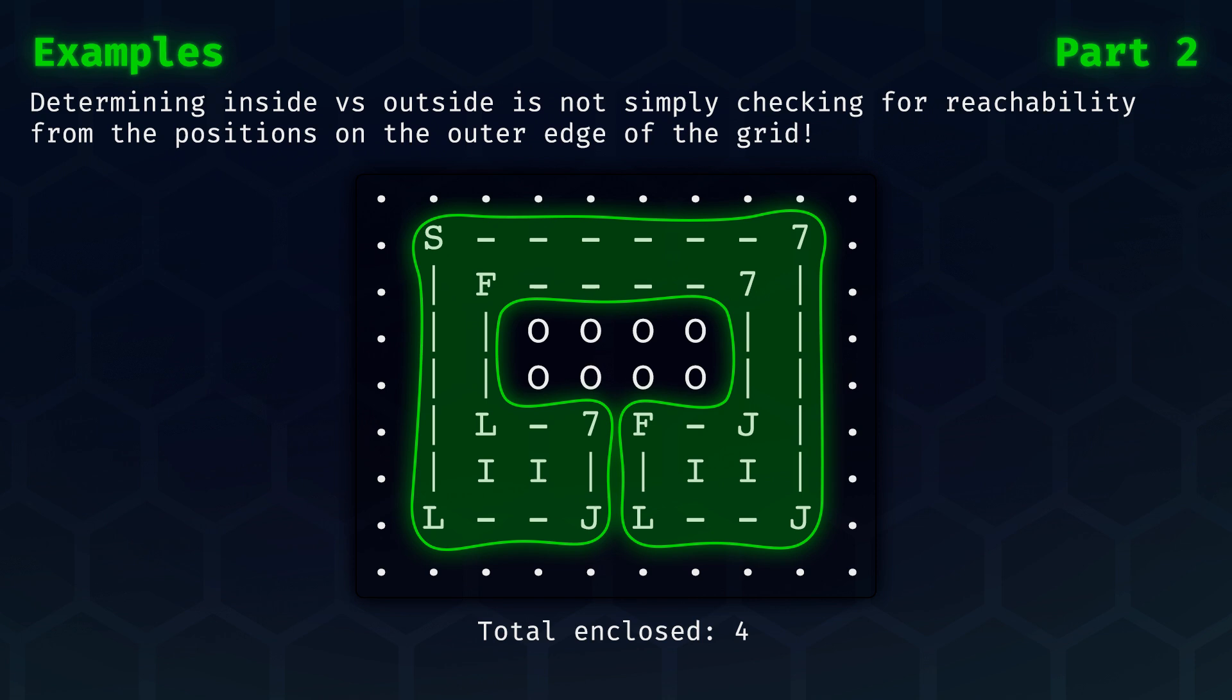Here you see a few fields marked with the letter O, which are both not reachable from outside the loop, but they're also not inside the loop. The total number of enclosed positions are the four fields which are labeled with the letter I.